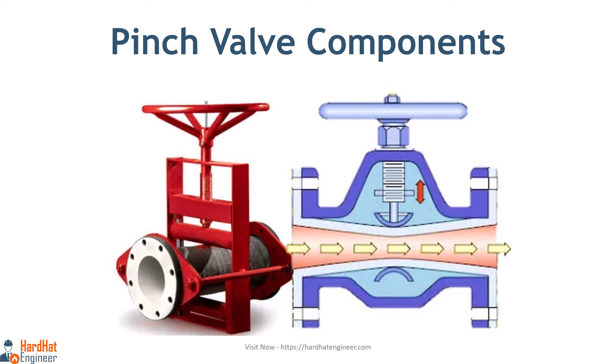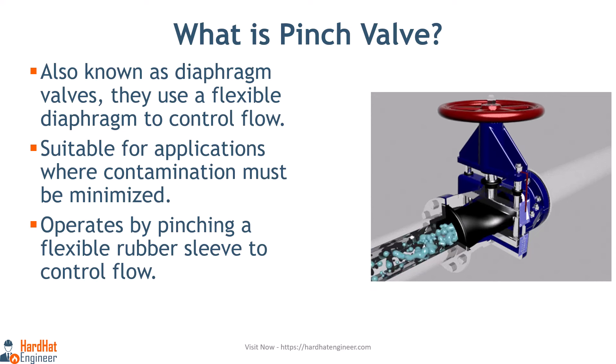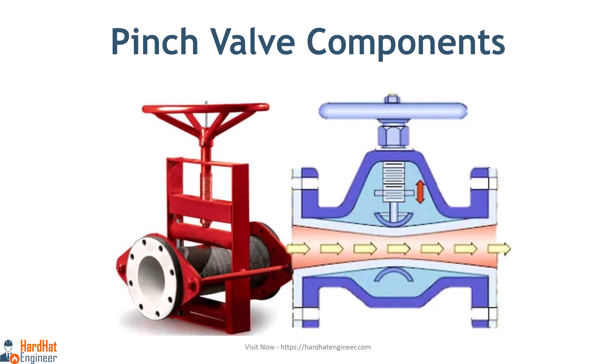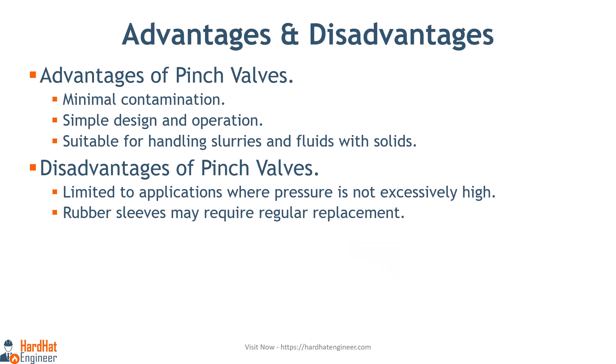The valve body holds the rubber sleeve that creates a flow path for the fluid or slurry to pass through, while the actuator is responsible for operating the pinch valve. The rubber sleeve acts as the gate that regulates flow by pinching or releasing the sleeve. There are several types of pinch valves available depending on their operating mechanism, such as air-operated pinch valves, pneumatic pinch, solenoid pinch valves, and mechanical pinch valves.